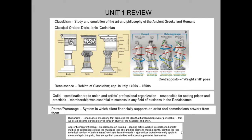The classical orders are styles of architecture derived from ancient Greece, picked up by the Romans, and continued into the Renaissance. They're identifiable by the capital, the top of the column. The Doric is the most basic — a simple drum. The Ionic has curlicues on the corners called volutes. The most decorative is the Corinthian, carved to look like decorative acanthus leaves.